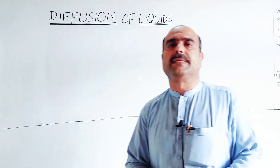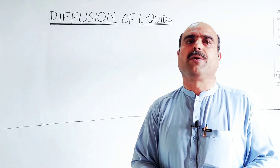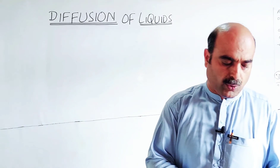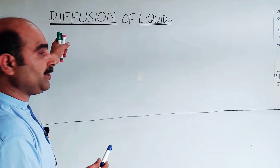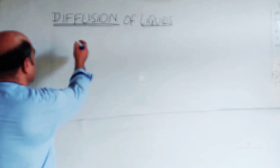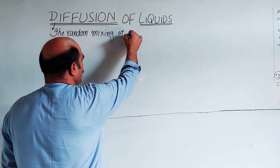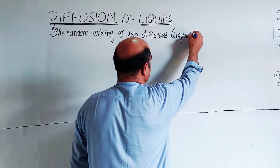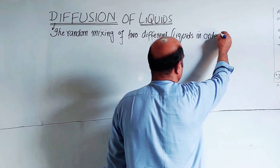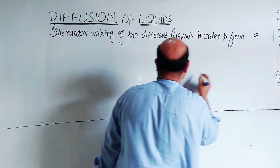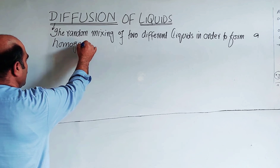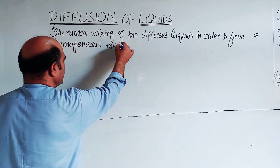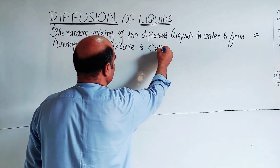Diffusion is the main property of all liquids. Different liquids can diffuse into each other. So what is diffusion? The random mixing of two different liquids in order to form a homogeneous mixture is called diffusion.